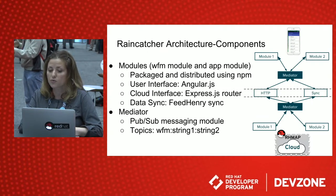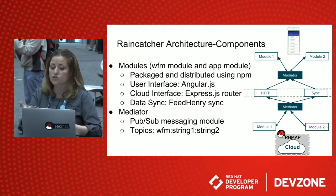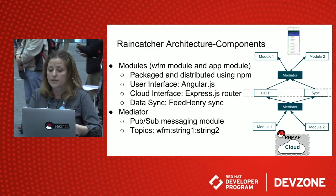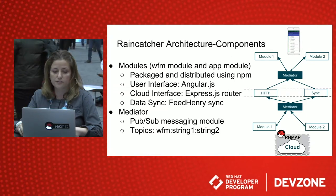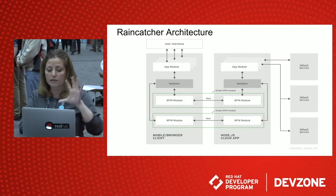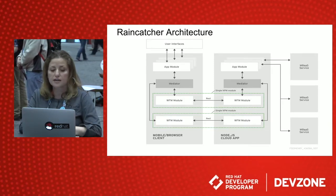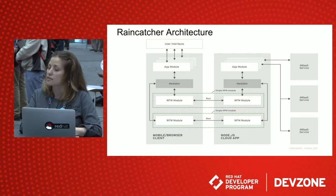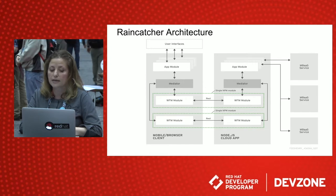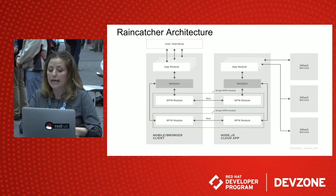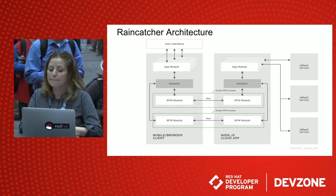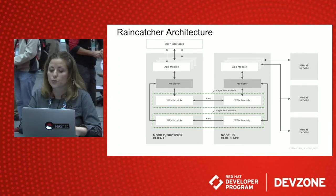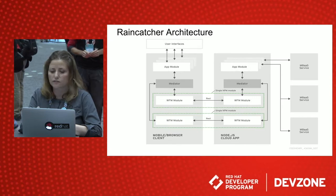Looking at the right side of the picture, we can see that the same module can have a piece of code that interacts with the user, uses a mediator to communicate with other modules, and can use HTTP sync to communicate with modules up in the cloud. This is a higher-level view of the RainCatcher architecture — starting at the user interface, an app module can have an Angular UI that talks to another module using a mediator, then uses all the platform WFM modules to communicate with modules on the cloud app. If you're familiar with Red Hat Mobile, you're probably familiar with our MBases — modules that help you interact with other servers on your network, like legacy servers.